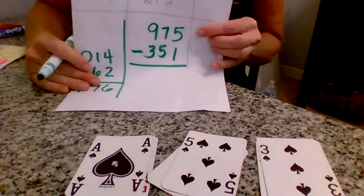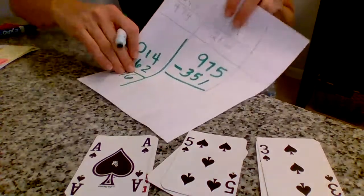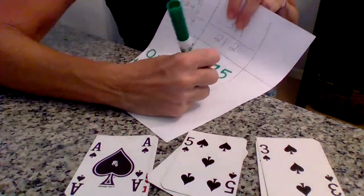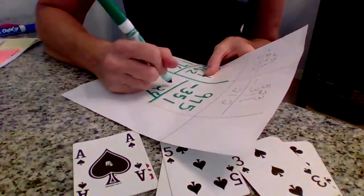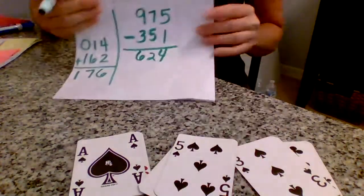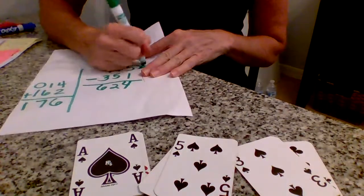So here's my math problem: 975 take away 351. And then I just subtract starting at the ones. 5 minus 1 is 4, 7 minus 5 is 2, and 9 minus 3 is 6. So my answer is 624. Remember, greater number on top.